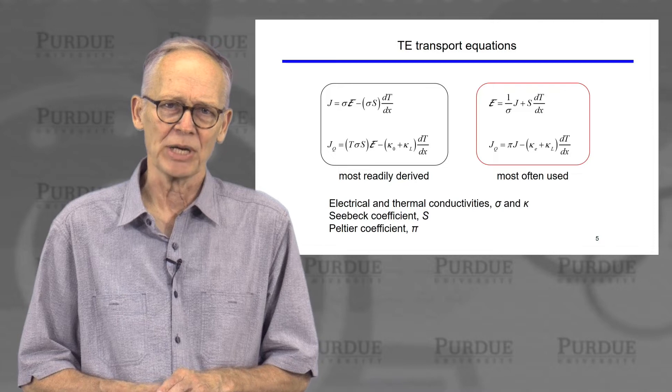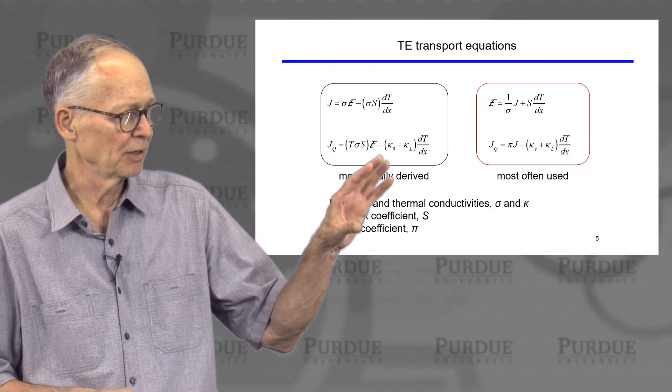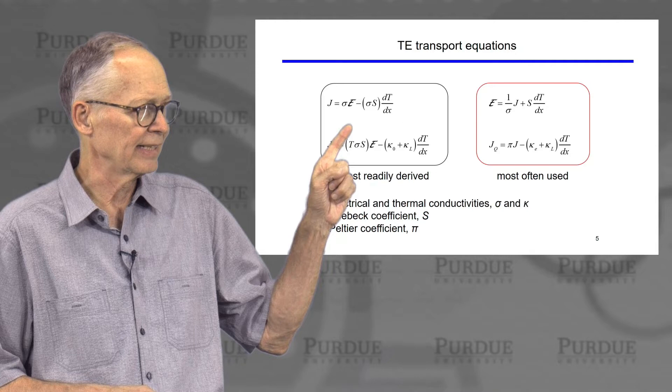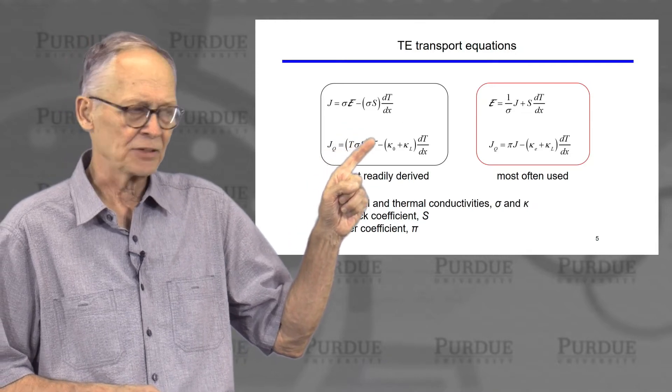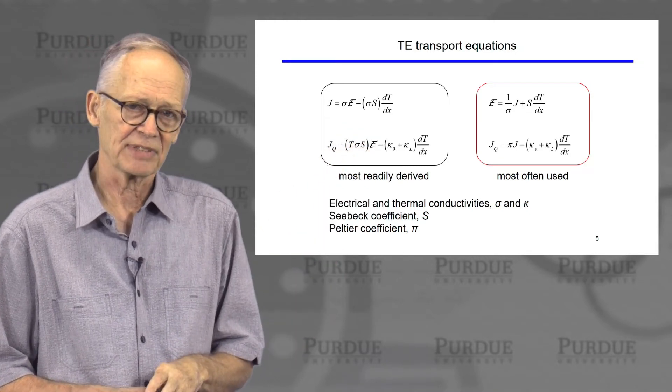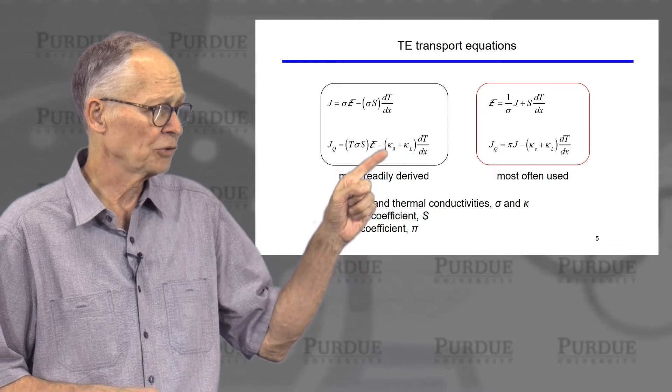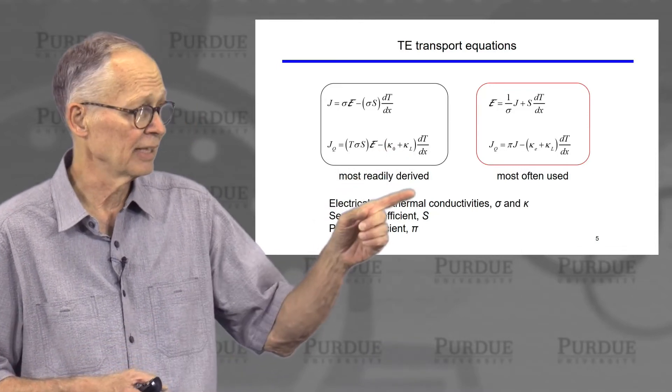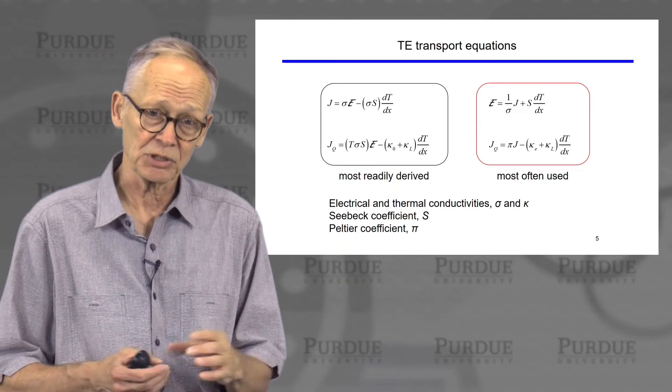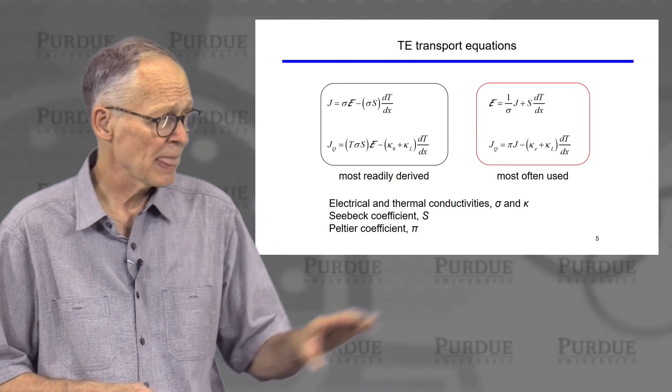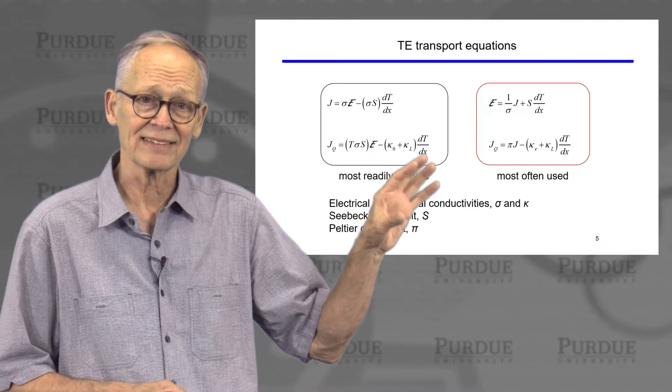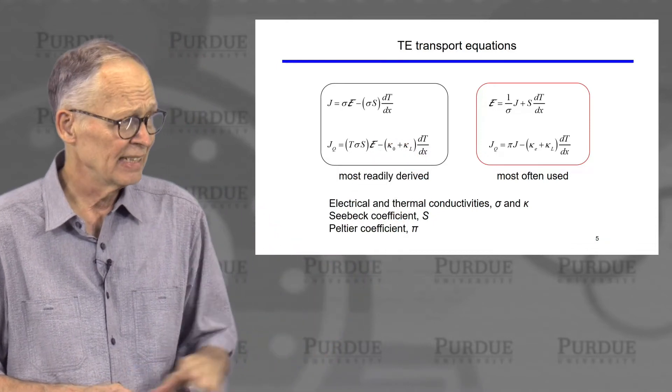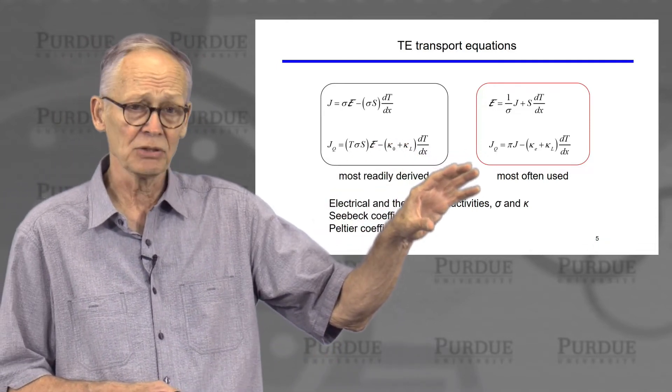These are the set of equations that are usually presented. There's a set that expresses the electrical current in terms of the electric field and the temperature gradients, and also the heat current in terms of the electric field, which drives a heat current, and the temperature gradient, which also drives a heat current. This is the form of the equations that is most easily derived mathematically.